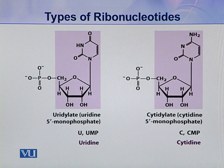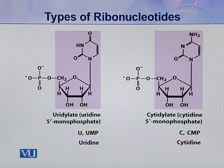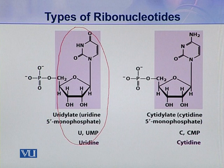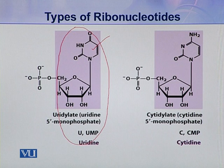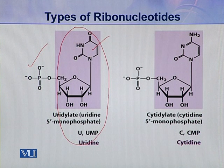Next, here are two other types of ribonucleotides. This coloured portion is a uridine because the nitrogenous base present here is uracil. So to this uridine, one phosphoric acid group is attached and it becomes uridylate. This is the third type of ribonucleotide present in the nucleic acids.